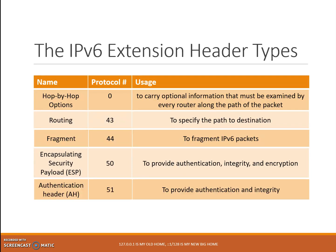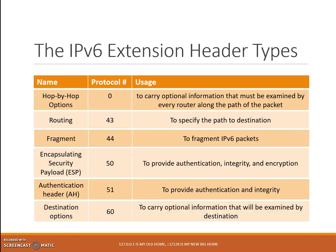Number five: authentication header, AH, protocol number 51. This extension header is used to provide authentication and integrity. And the last extension header type is destination options, protocol number 60. This extension header is used to carry optional information that only needs to be examined by a packet destination node.